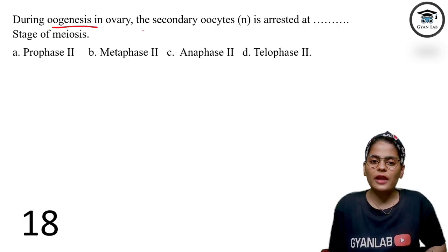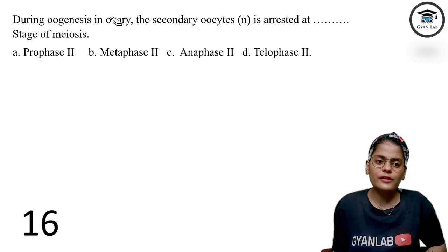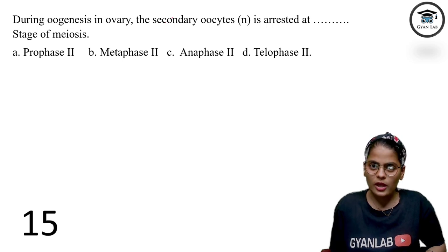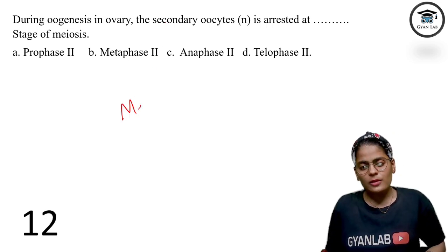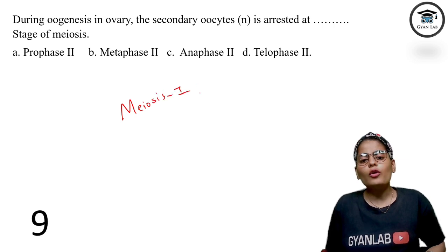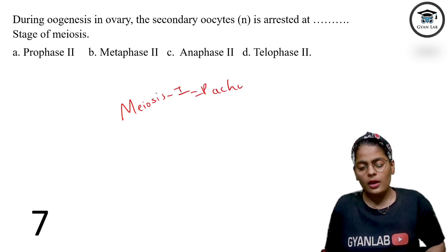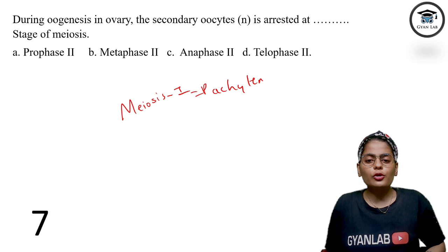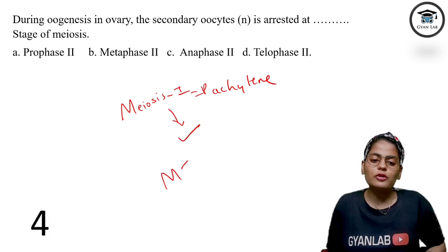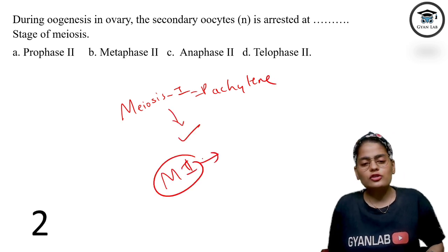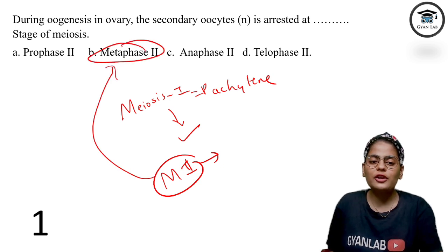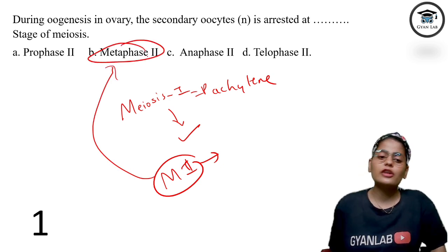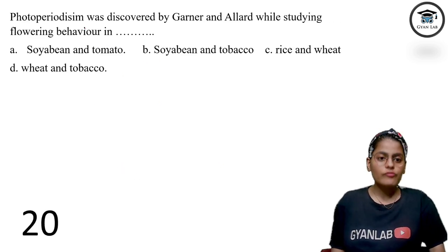During oogenesis, at which phase is the secondary oocyte arrested? During meiosis 1 in our oocyte, it is arrested at the pachytene stage. Then as it matures, meiosis 1 completes and meiosis 2 starts. But meiosis 2 is arrested at the metaphase 2 stage.